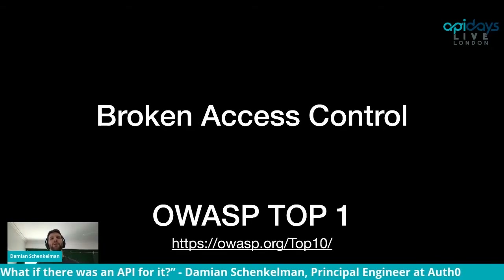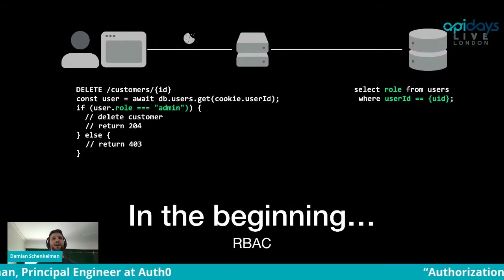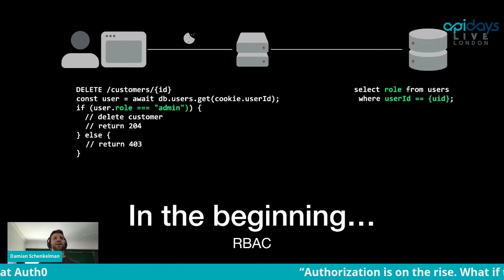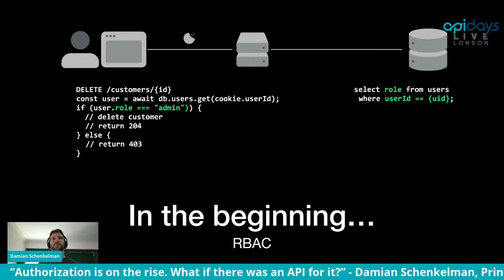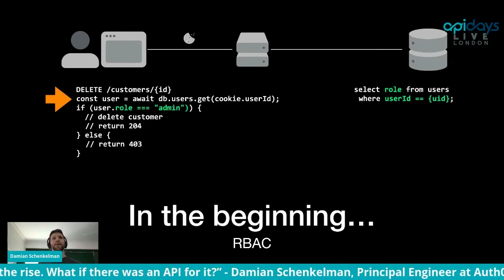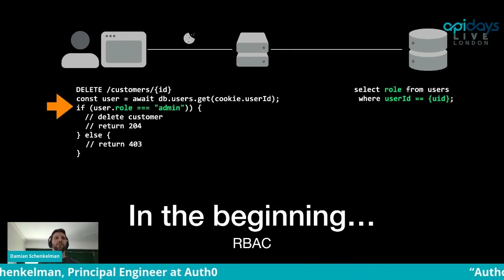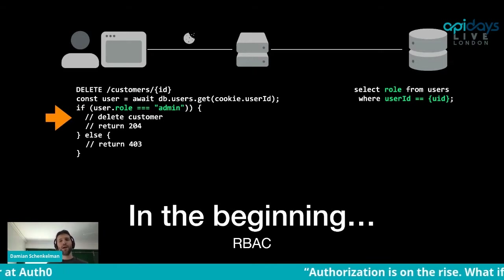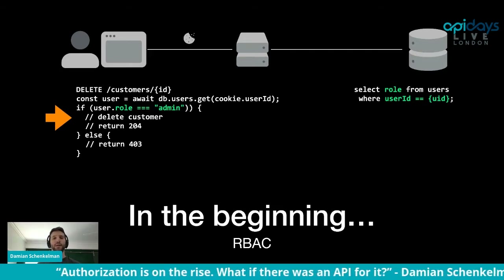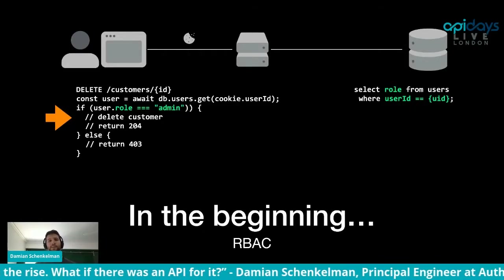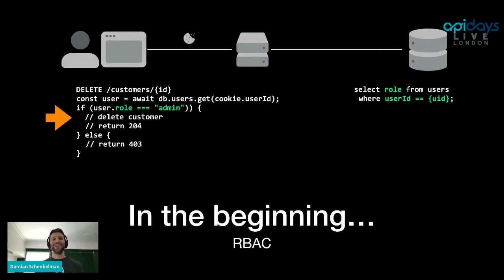If we look at the history of authorization, we typically see both historically over the years and when we look at a specific system, authorization often starts simply. You might be implementing an endpoint to delete a customer by an identifier. You would get a user role from the database by the cookie user ID, and if they are an admin — the role that they have — you would go and delete the customer. This is known as role-based access control, which means the actions or permissions a user has depend on their role. These roles are typically global for an entire application for a particular user or for an entire customer in a multi-tenanted system.